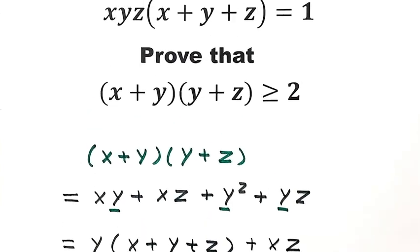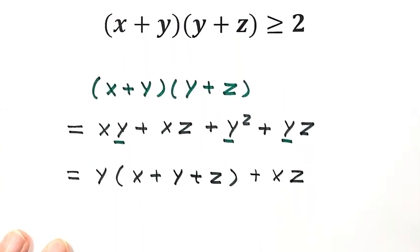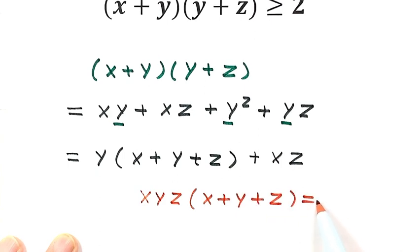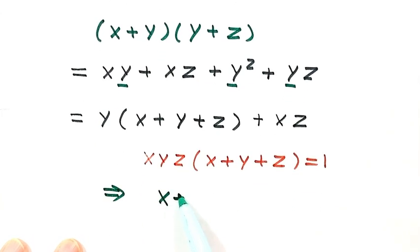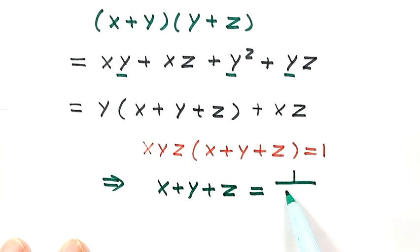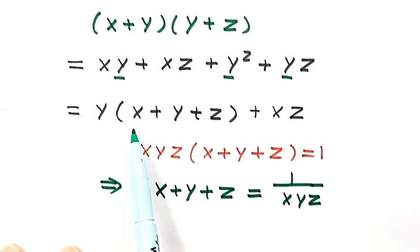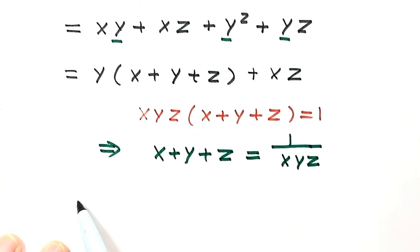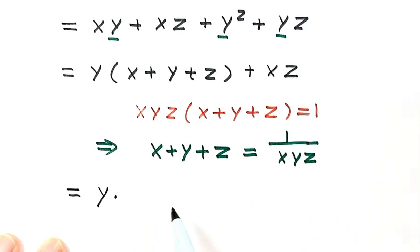Now let's see the given equation. From the given equation, xyz times x plus y plus z equals 1, so we can solve for this part. Then x plus y plus z equals 1 over xyz. We're going to use this to replace here, so it equals y times 1 over xyz.